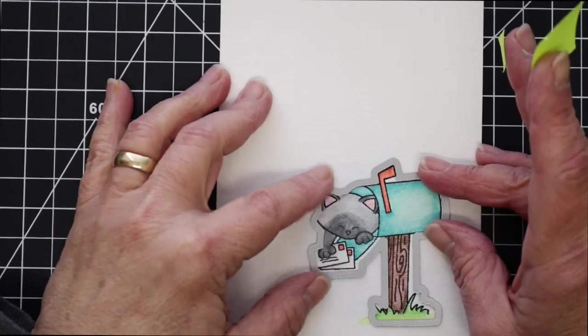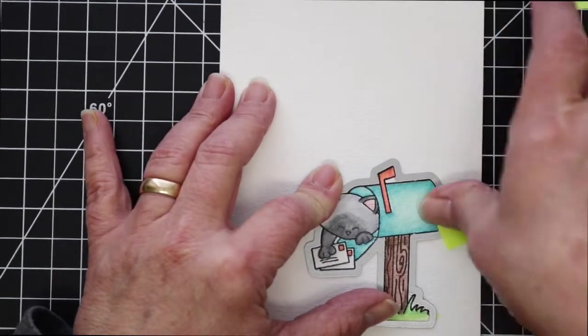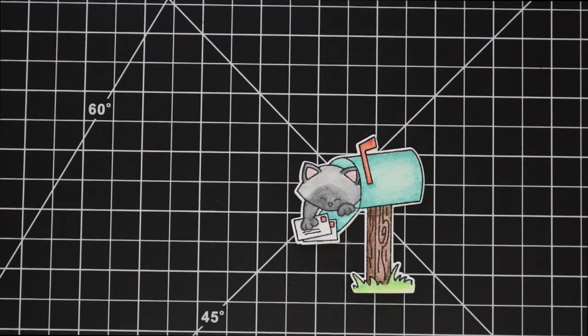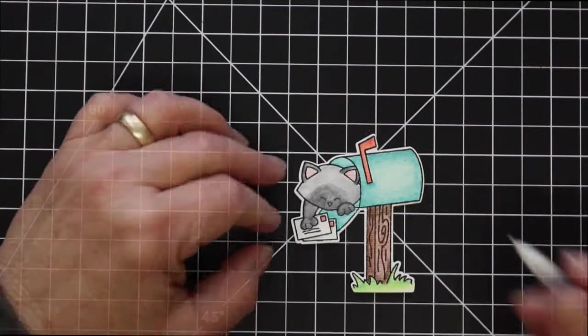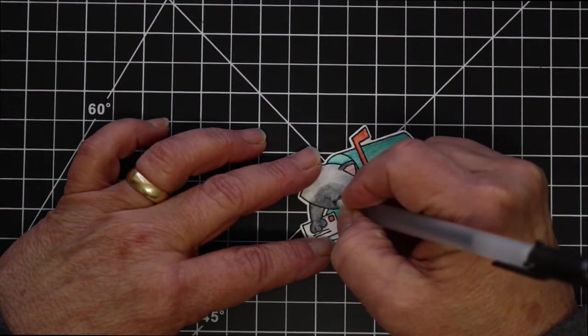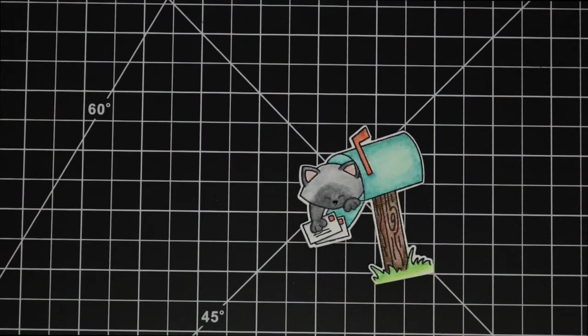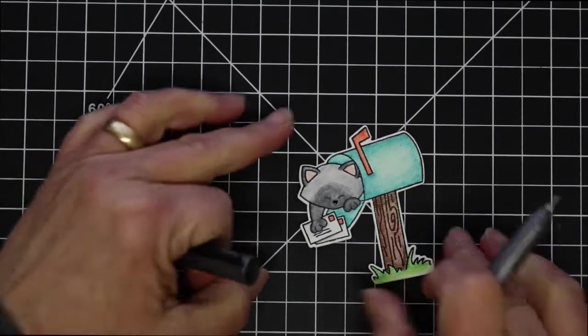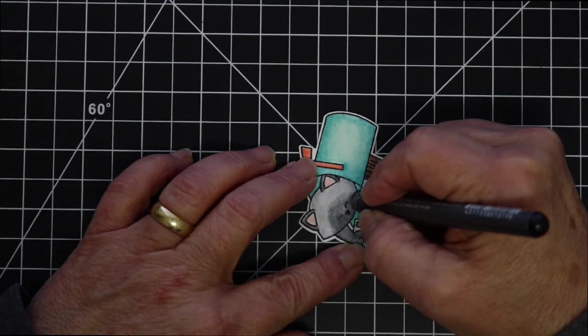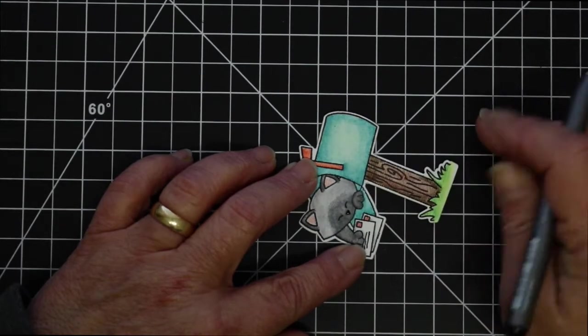You can see here I finished the coloring and now I'm taking the coordinating die and I am going to take that over to my big shot and cut him out. I am also going to use my black glaze pen just to brighten up his nose a little bit and to darken up his eyes. I find that these particular watercolor pencils dull down the actual black ink. It's like they're a little chalky or something.